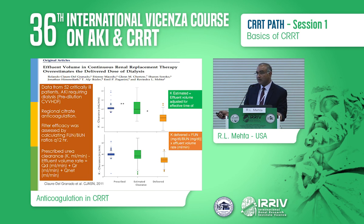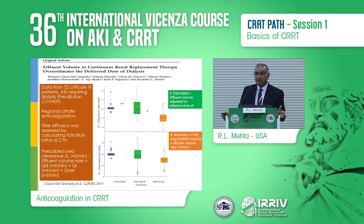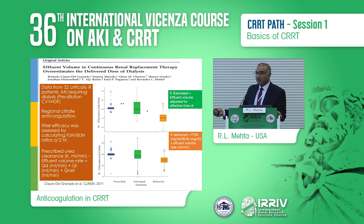In our center, we measure the efficacy of the filter every 12 hours simply by looking at the fluid urea nitrogen and the blood urea nitrogen ratio. If that ratio drops to 0.8 or lower, we change the filter even though it hasn't clotted. If you apply that principle, what you see is here's the prescribed amount by ml per kilo or whatever effluent volume, and this is what you estimate clearance to be based upon time on therapy.